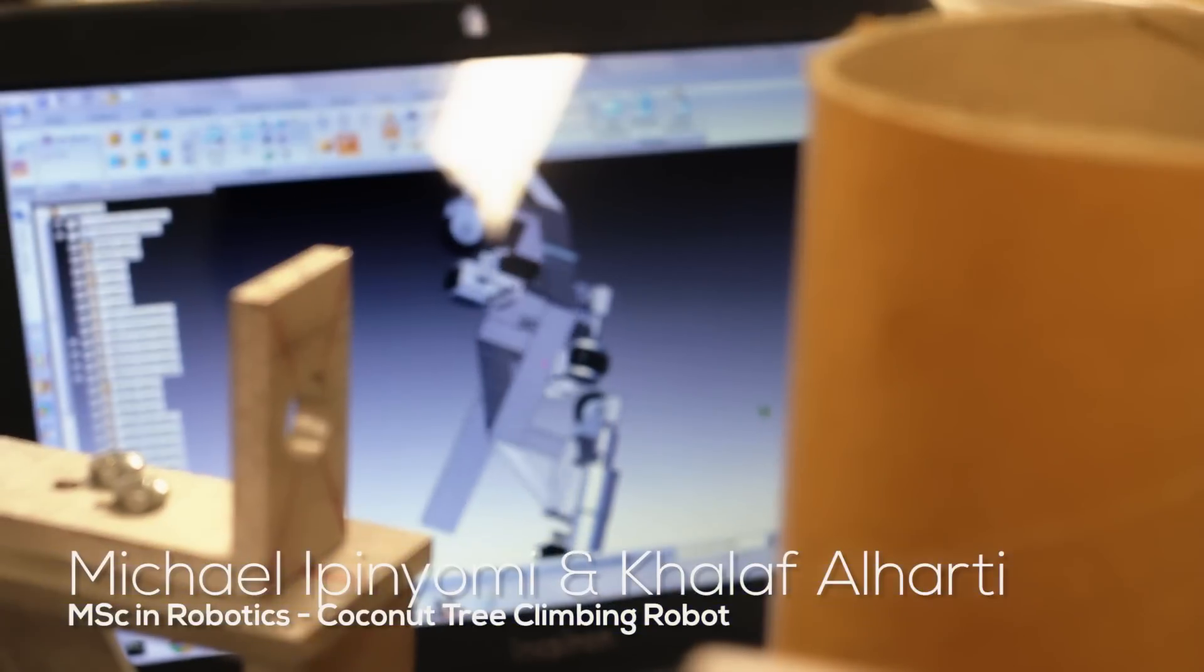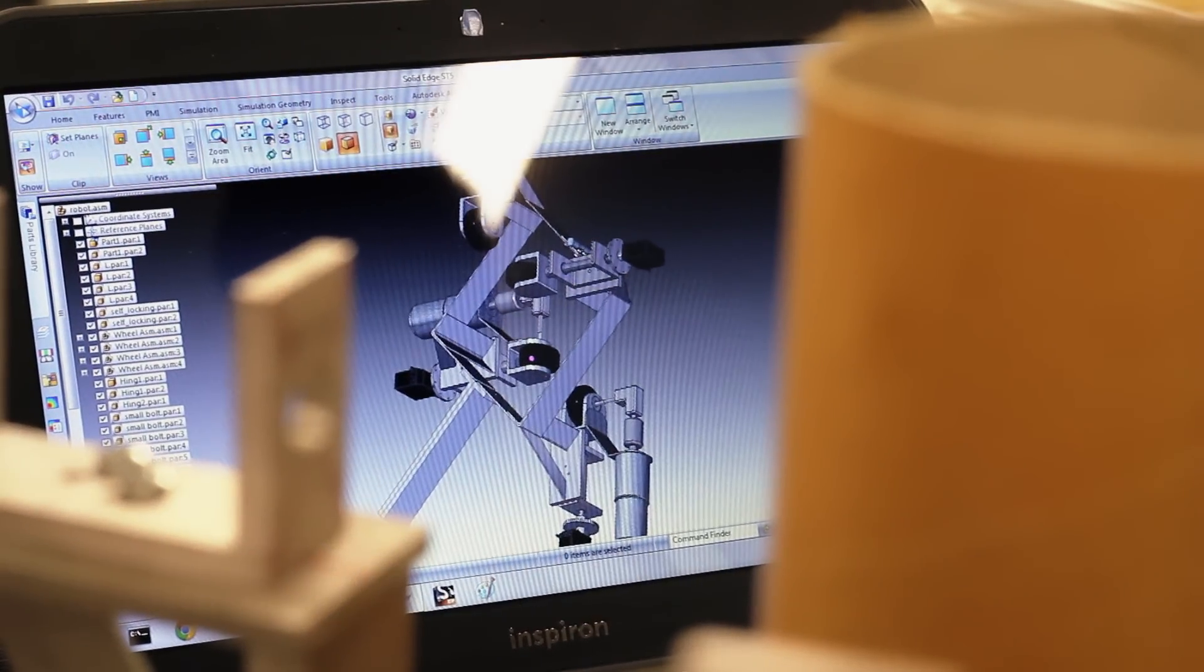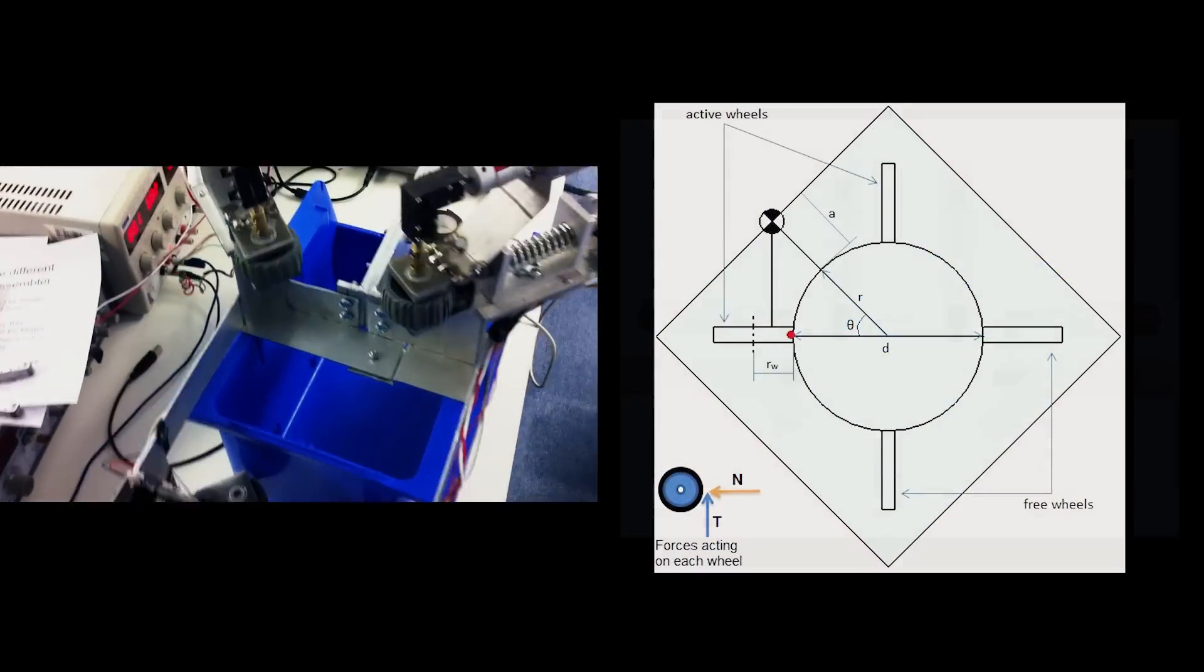We are designing a coconut tree climbing robot and building a scale prototype. The robot is supposed to be able to climb a tree about 25 meters high. Coconut harvesting is a big industry in some parts of the world, but it's very dangerous and hard work.